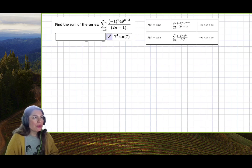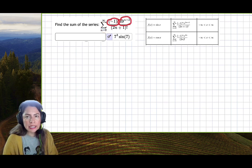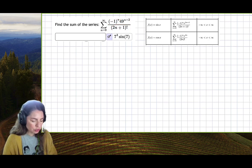In this example we have the sum from 0 to infinity of negative 1 to the n, 49 to the n plus 2, all over 2n plus 1 factorial.